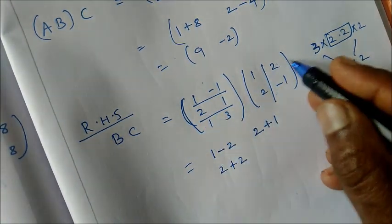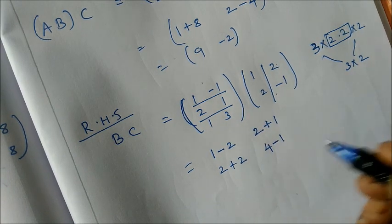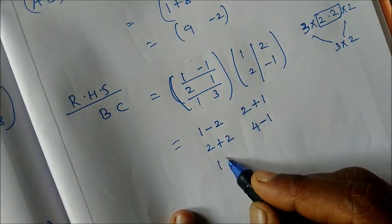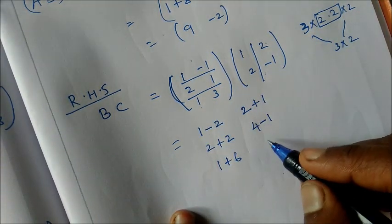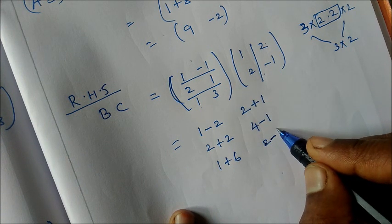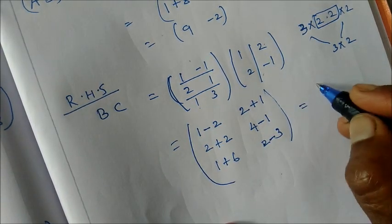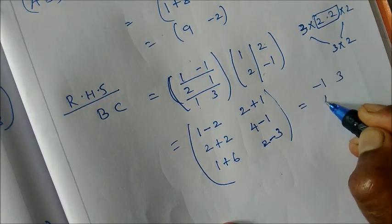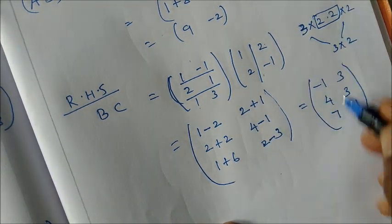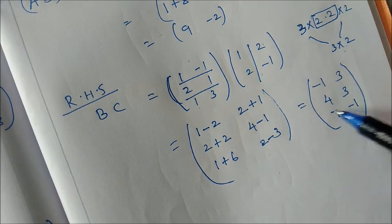Second row second column: 2×2=4, plus (−1)×1=−1. Third row first column: 1×1=1, plus 3×2=6. Third row second column: 1×2=2, plus (−1)×3=−3. After adding and subtracting, BC = [−1, 3; 4, 3; 7, −1], a 3×2 matrix.